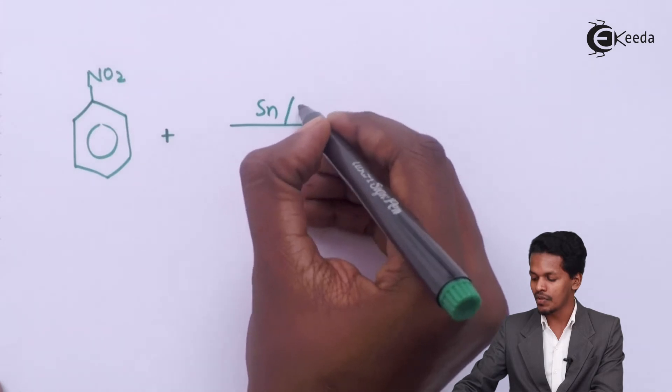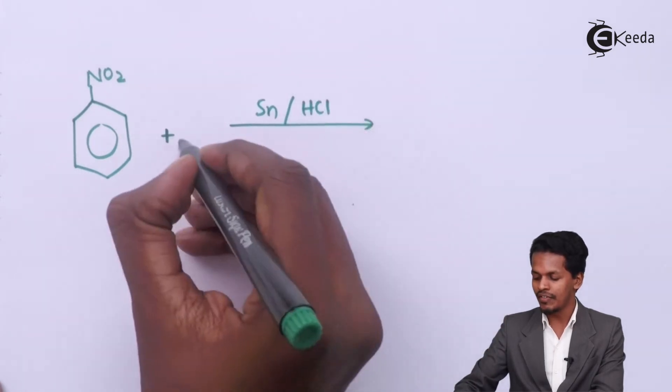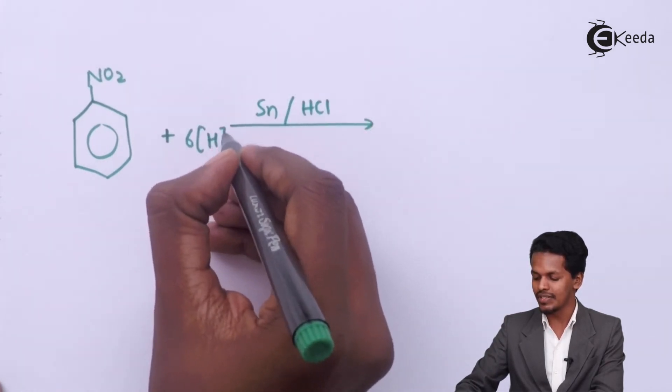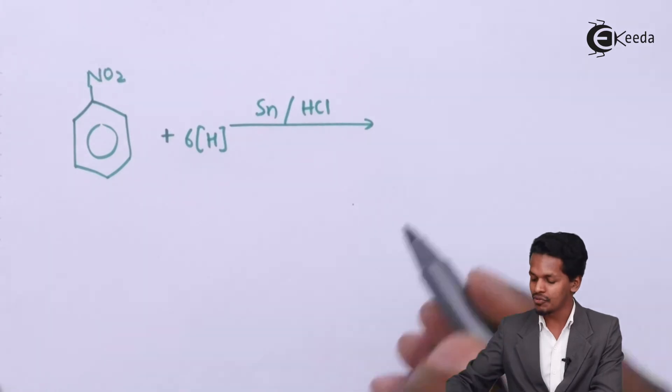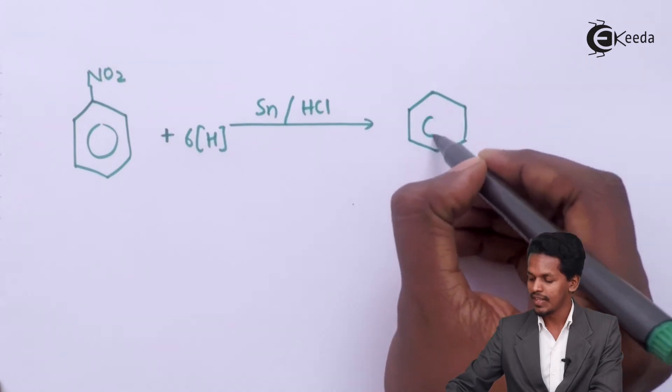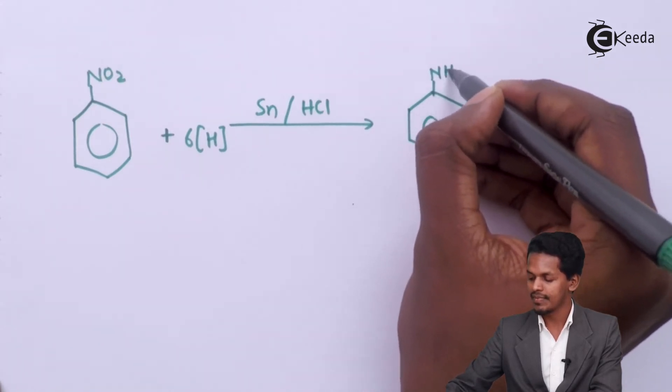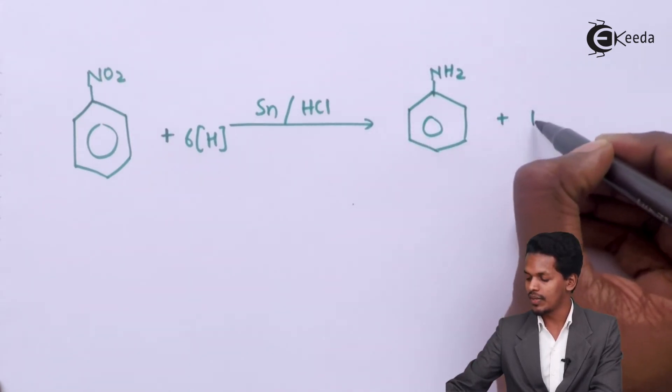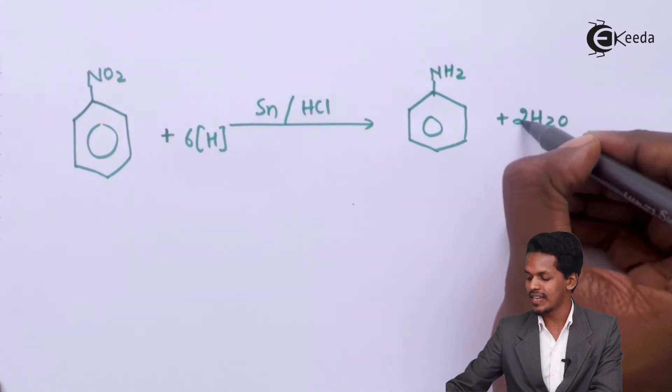tin along with concentrated HCl, obviously it will produce 6 moles of nascent hydrogens, and these 6 moles of nascent hydrogens will be helpful in converting this NO2 group into NH2 group, and we could get water as a byproduct also.